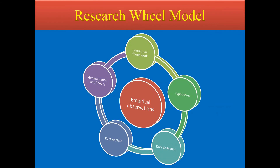In the research wheel model, the components are: conceptual framework, hypothesis, data collection, data analysis, and within the circle there is another circle representing empirical observations. Finally, the process leads to generalization and theory.